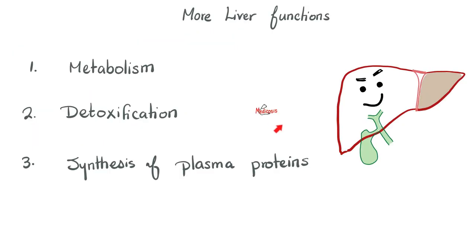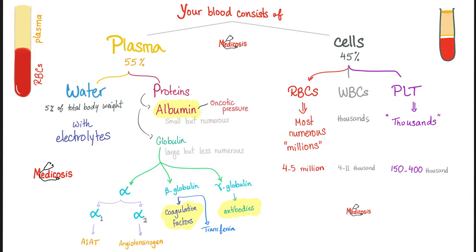Besides fat digestion, does the liver have other functions? Of course - metabolism. The liver is the lab of your body; most biochemistry pathways happen in the liver. Next, detoxification of toxins from food, medication, and environmental exposures. And don't forget - plasma proteins come from the liver. Blood is made of plasma and cells; plasma contains water and proteins: albumin and globin. Beta globin are the coagulation factors; gamma globin are immunoglobulins or antibodies. Remember albumin, coagulation factors, and antibodies.